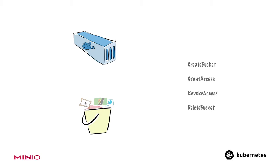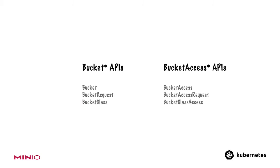The bucket API also introduces six new objects into Kubernetes. These custom resources are: buckets, bucket access, bucket request, bucket access request, bucket class, and bucket access class. These symmetric pairs of objects between buckets and the access for those buckets represent the two different types of bucket-related operations — creating, updating, and deleting buckets, or creating, updating, and deleting access to those buckets.